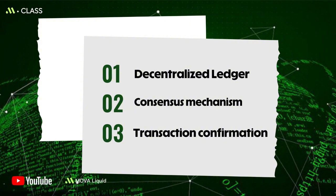Next, consider consensus and block generation. POW relies on competition for computing power, while POS relies on stake and penalty constraints. Regardless of the different paths, the goal is to select a trustworthy ledger keeper and generate a new block within the same time window.